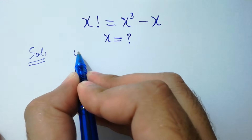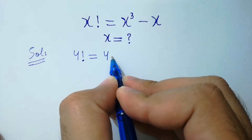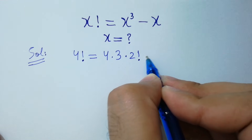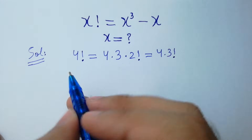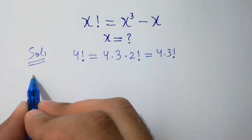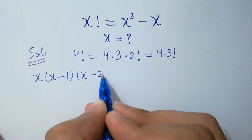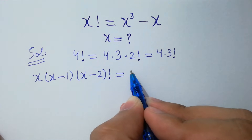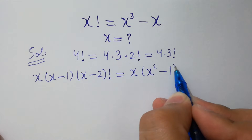Since 4 factorial equals 4 times 3 times 2 factorial, which is the same as 4 times 3 factorial, on the left-hand side x factorial will be equal to x times (x minus 1) times (x minus 2) factorial. On the right-hand side, x will be common, giving us x squared minus 1.